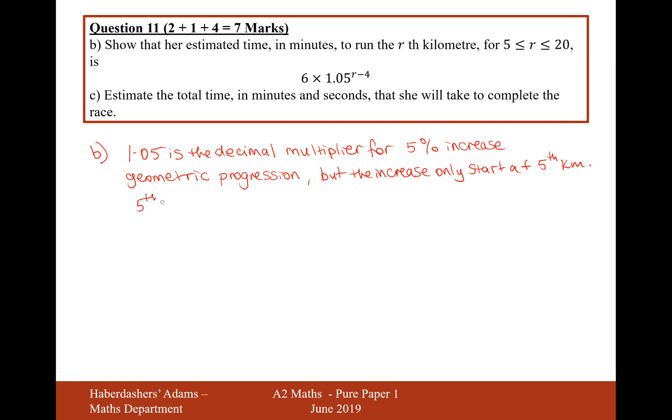So on the fifth kilometer, it's going to be 6 times 1.05 to the power of 1. The sixth kilometer is going to be 6 times 1.05 to the power of 2. Therefore, the rth kilometer is going to be equal to 6 times 1.05 to the power of r minus 4. It's more of an explanation you have to provide for that one, because it's difficult to know what else to do really.